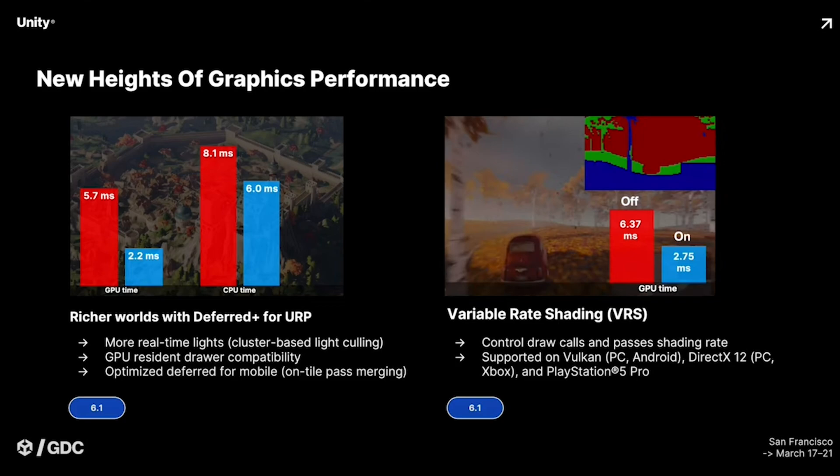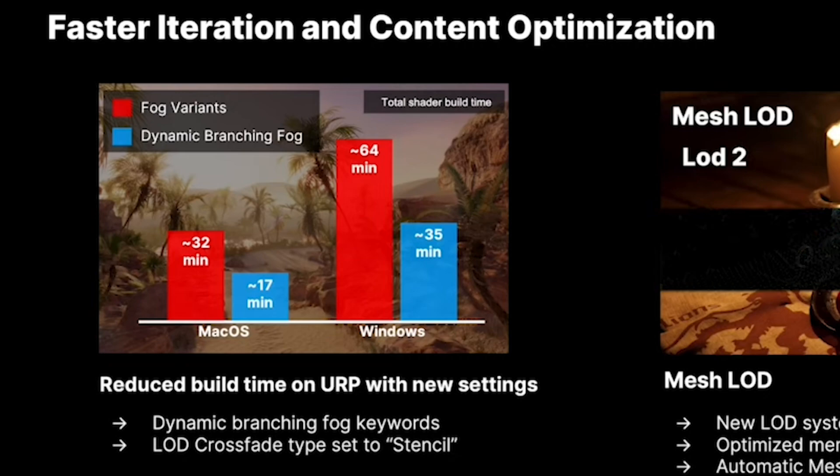Graphics performance is also getting several significant boosts in 6.1. Variable rate shading allows selective shading at different rates to improve GPU efficiency — supported across Vulkan, DirectX 12, and the PlayStation 5 Pro — giving you more control over where to allocate your rendering resources. Additionally, Deferred+ for URP is offering more real-time lights, GPU resident drawer capability, and optimized deferred rendering for mobile.